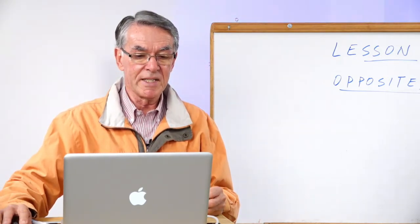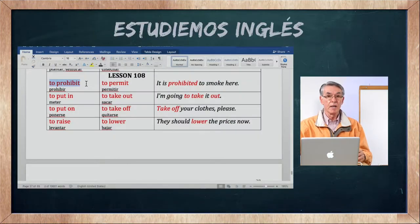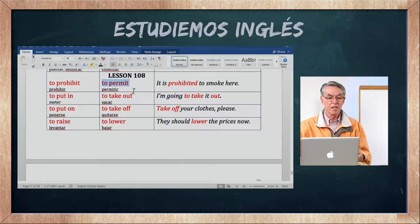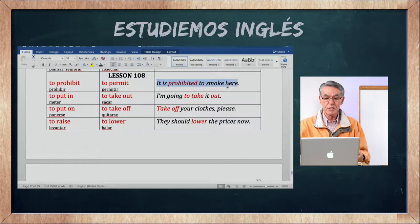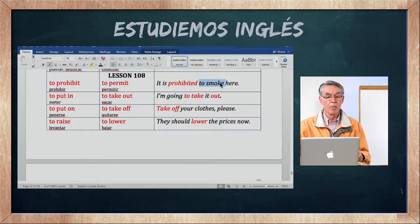Empezamos con los verbos. To prohibit — el verbo to prohibit es prohibir. Y el contrario: to permit. Permit es permitir, prohibit es prohibir. It is prohibited to smoke here. Está prohibido fumar aquí.